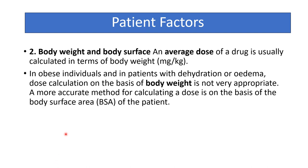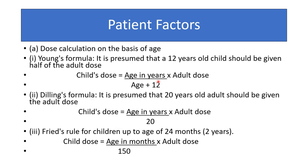Body weight and body surface area: an average dose is usually calculated in terms of body weight. In obese individuals or dehydrated patients, calculation on the basis of body weight alone is not appropriate, so the more accurate method is based on body surface area.